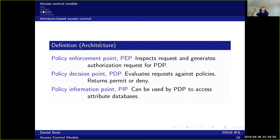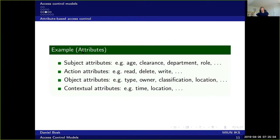All three of these — the policy enforcement point, policy decision point, and policy information point — are part of the reference monitor system that enforces the policy, but it's split into these three parts. The attributes could be basically anything. For instance, subject attributes such as the age of the subject, the subject's clearance, department, role, or similar. There can also be action attributes — for instance, read, delete, or write — which are the attributes of the operation that the subject wants to perform.